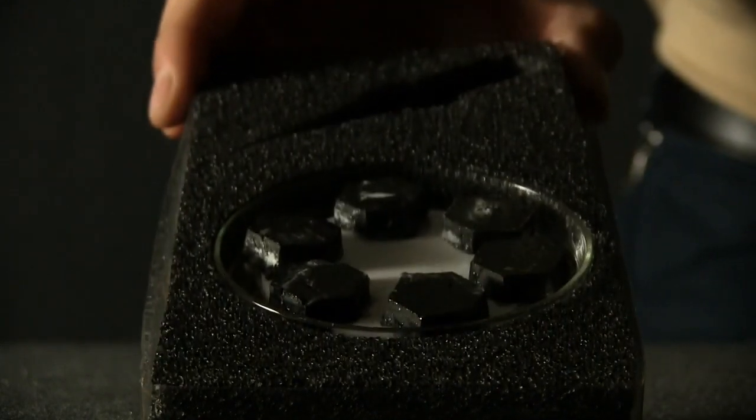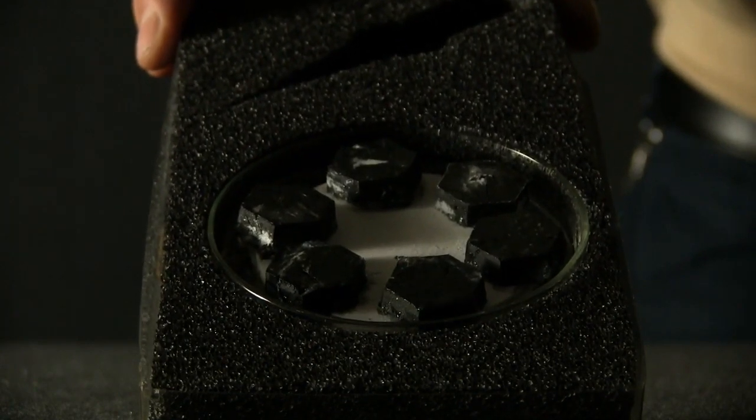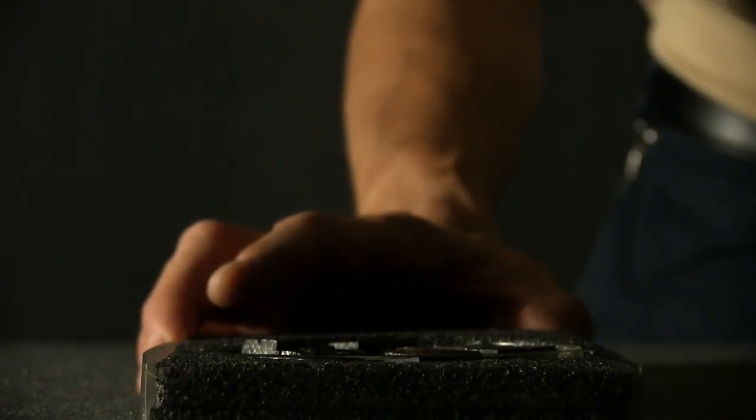I'm going to demonstrate to you now one of the properties of a superconductor. It's called the Meissner effect. What I have here are six pieces of yttrium barium copper oxide. This is one of these high-temperature superconductors.